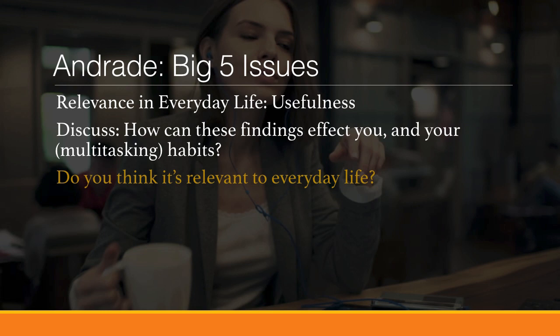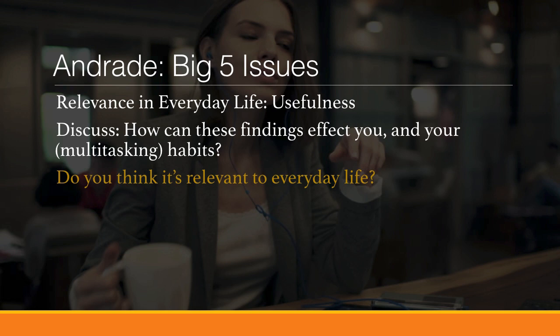Moving toward the end: the big five issues. The ones to discuss here are relevance in everyday life and usefulness — we'll have a discussion about this in class. Based on what you learned, how would you change your multitasking habits? Maybe you'll change how you study, listen to music while you study, or use your senses differently. We can talk about how this is relevant and whether it's going to change your behavior.